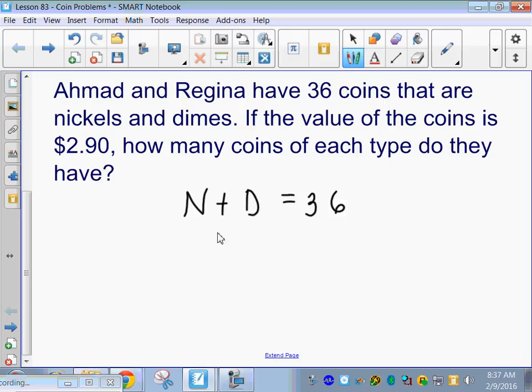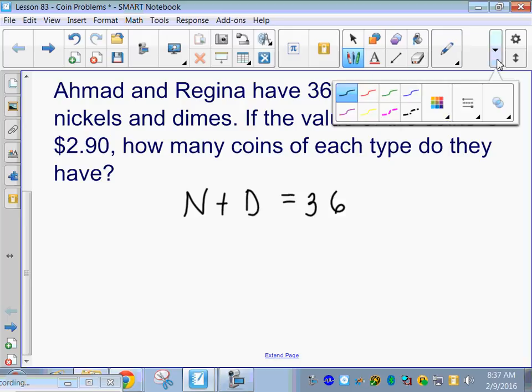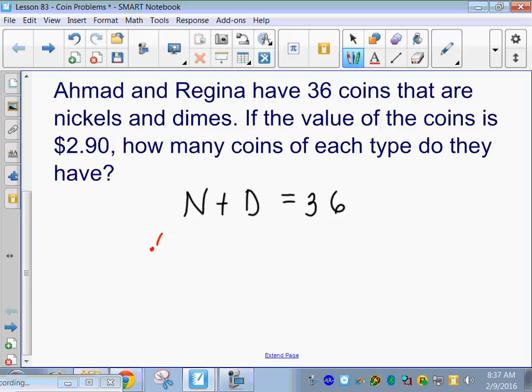Alright, I just want to show you something, so don't write this down yet, but 5 cents would be .05, right? Per nickel. And 10 cents would be .10 per dime, and we would get $2.90 for our total value. But, there's a better way to write this. What do you guys think would be better? Do you want to have to do decimals, Drew?